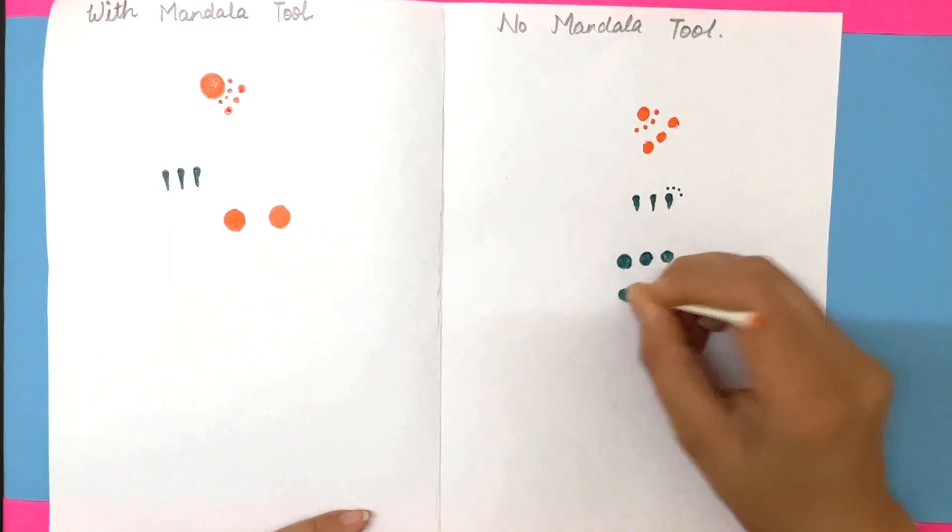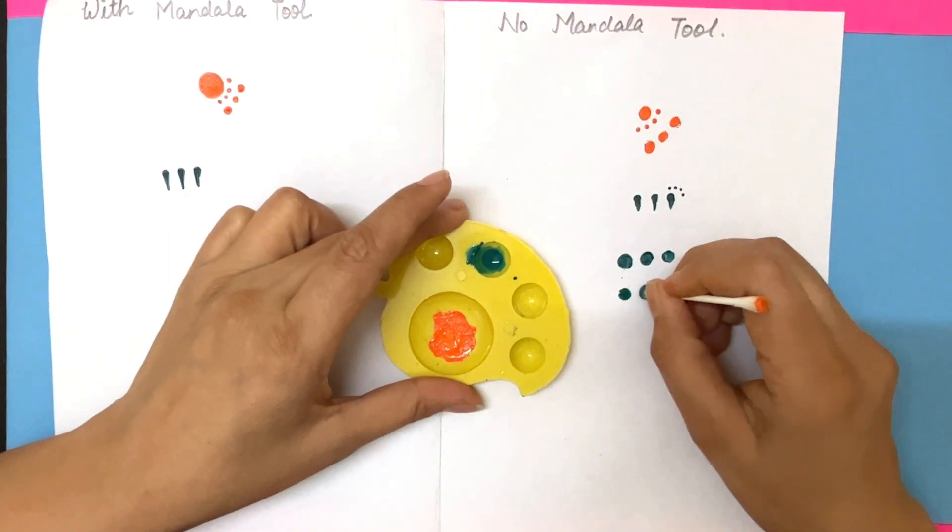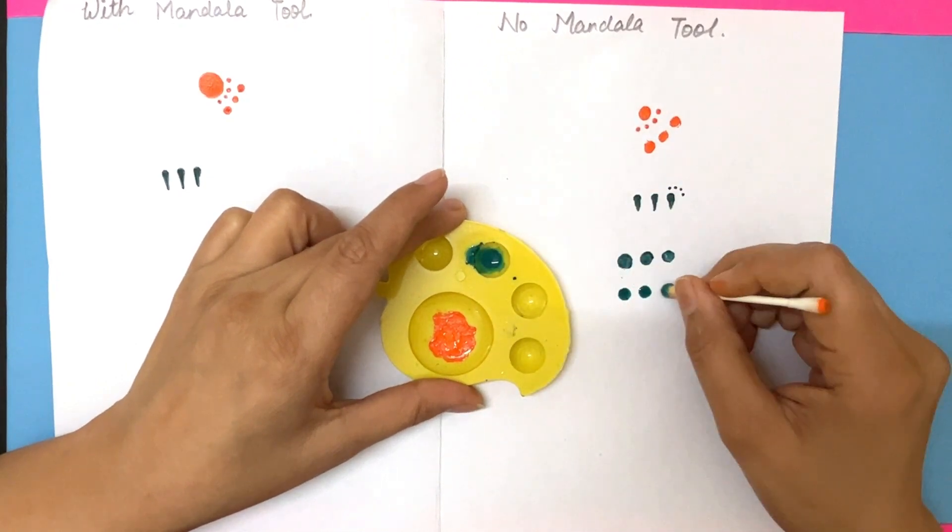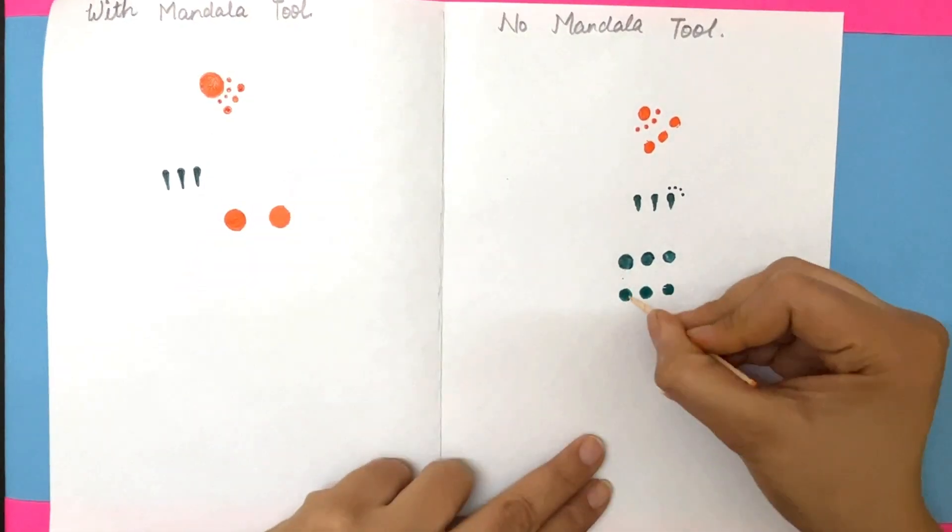Same way, if you do not get a perfect design or a perfect dot, you can easily correct it by taking some color on your tool.